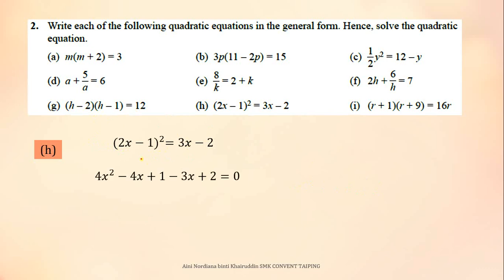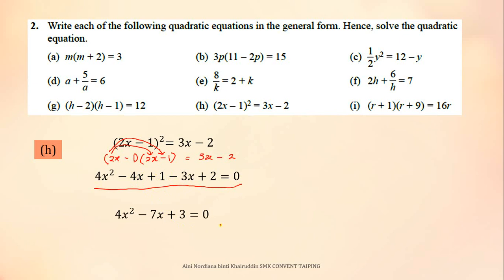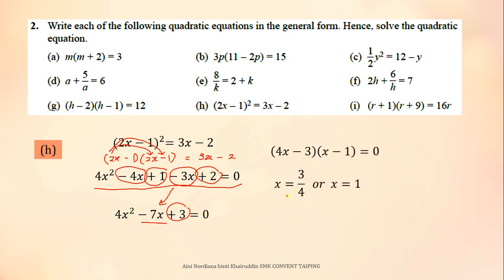For question H, this is the equation. First, write the squared bracket as two separate brackets: 2X minus 1 times 2X minus 1. Then expand the equation. Rearrange into general form — negative 4X minus 3X gives negative 7X, and 1 plus 2 gives positive 3. This is now in general form; factorize to get X equals 3 over 4 and X equals 1.